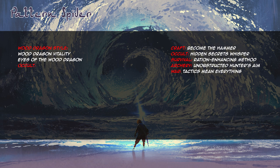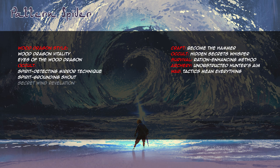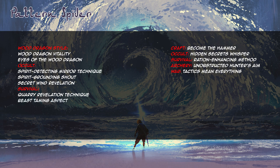Because I'm going to interact with spirits I decide to take Spirit-Detecting Mirror Technique — it'll be needed to perceive dematerialized spirits. Spirit-Grounding Shout lets me use any combat ability to actually strike a spirit. Secret Wind Revelation makes it so that the storyteller must inform me if there are dematerialized spirits nearby. These three occult charms are a good base for a character interested in negotiating with spirits. I also invest in survival: Quarry Revelation Technique helps with tracking, Beast-Taming Aspect helps with training animals, and Animal Empathy Technique makes her better at communicating with animals.